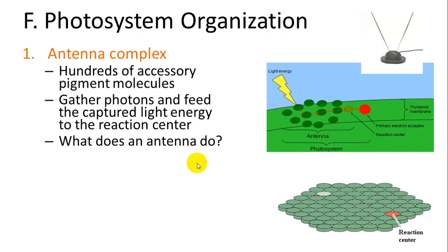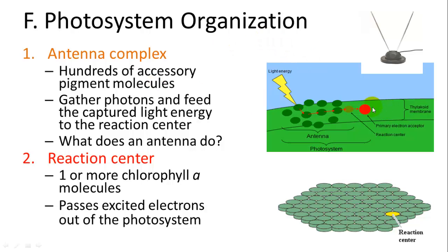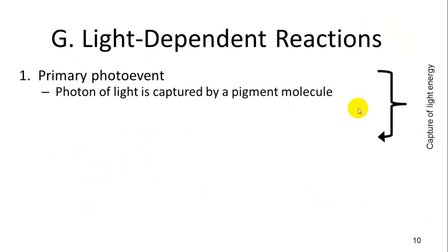The light reaction depends on photosystem organization. One part is the antenna complex, which acts as a funnel for energy. It has hundreds of accessory pigment molecules — chlorophyll b and carotenoids — that gather photons and pass them to the reaction center, just like an antenna funneling a signal. The reaction center contains chlorophyll a molecules that excite electrons out of the photosystem.